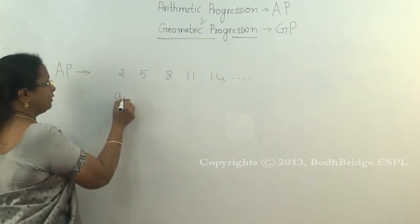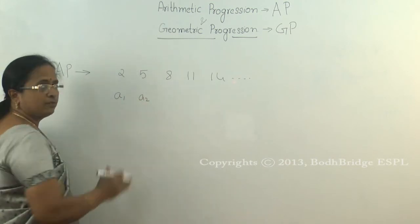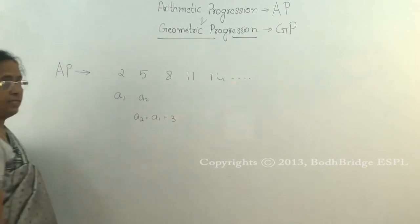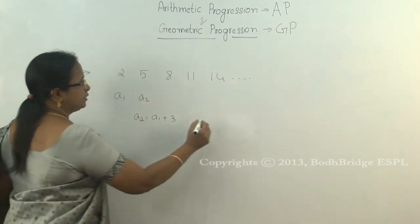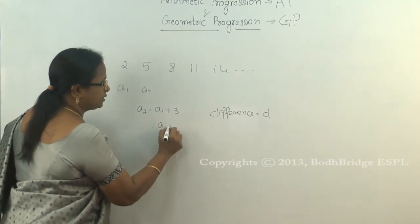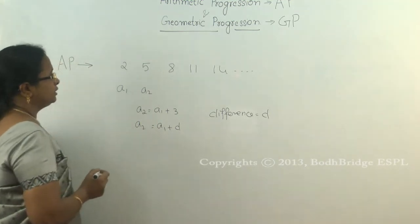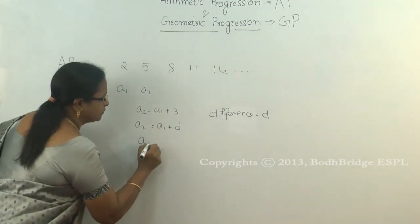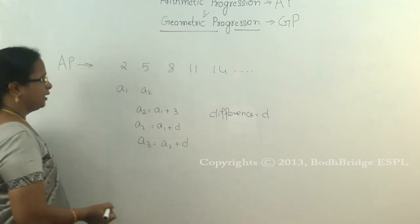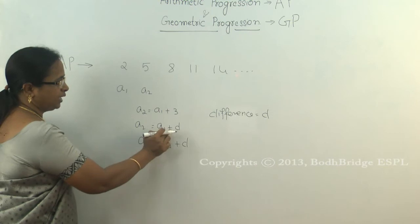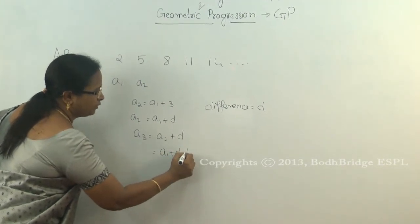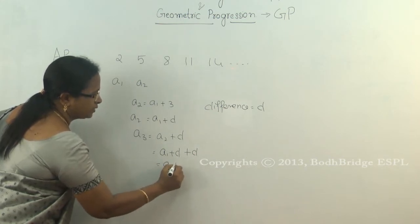Considering the first term as a₁ and the second as a₂, we can write a₂ = a₁ + 3, where 3 is the difference between the two numbers. Let us call this difference d, so a₂ = a₁ + d. Similarly, a₃ = a₂ + d. Substituting a₂ = a₁ + d into this, we get a₃ = a₁ + d + d, which becomes a₁ + 2d.